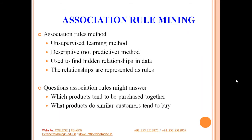The answer is using the concept of Association Rule Mining. Association rules are a method of unsupervised learning, which considers an unlabeled dataset and tries to identify patterns from it. Association Rule Mining is a descriptive method, not a predictive method. We use the data that is available and try to identify the hidden relationships in that data. Such relationships are often represented in the form of rules, which we will see in the next slide.